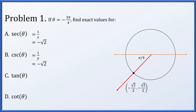The cosecant is the reciprocal of the y coordinate, which is the same as the x coordinate for this angle, so we get −√2 again. Since the x and y coordinates are the same, the tangent, which is the ratio of y to x, will be 1, and the cotangent is the reciprocal of that, which will also be 1.